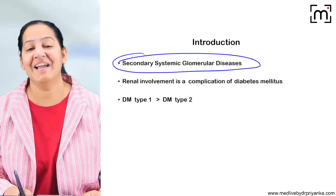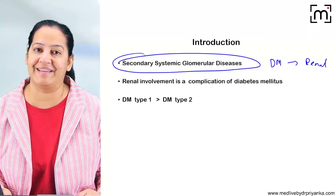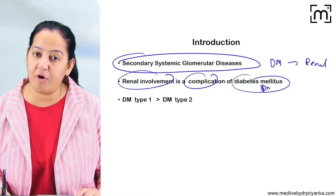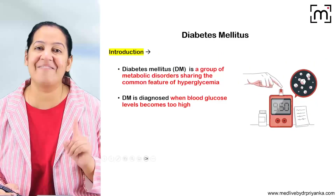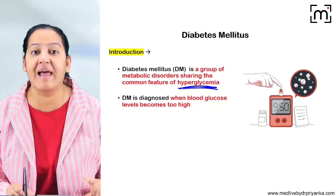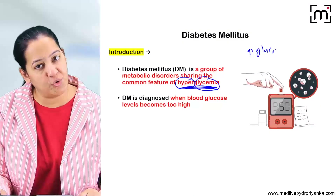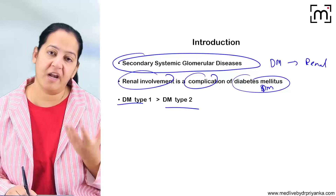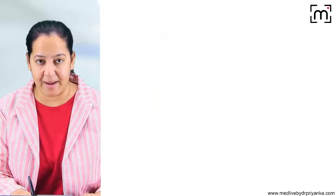In secondary glomerular disease, the main disease is diabetes mellitus and the renal involvement is a complication. Diabetes mellitus is a group of metabolic disorders having a common feature of hyperglycemia — hyper means more, glycemia means sugar. There are two types: type 1 and type 2 diabetes. Renal involvement can occur in both, but it is more common in type 1 compared to type 2.